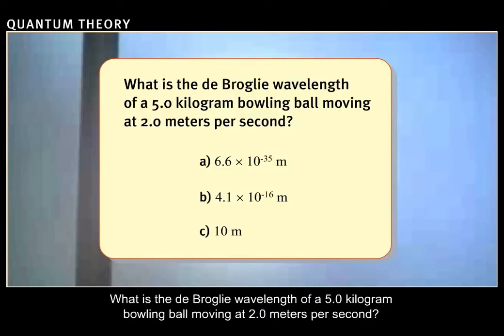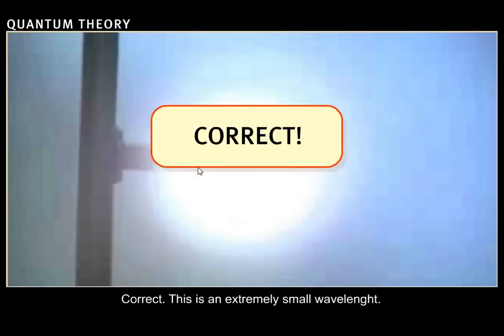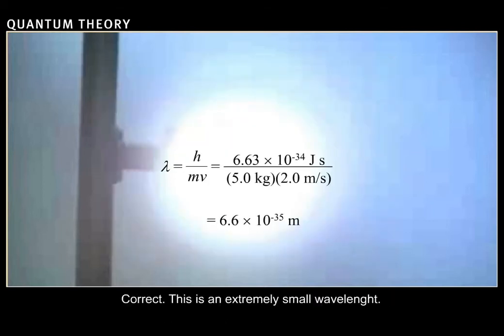What is the de Broglie wavelength of a 5.0 kilogram bowling ball moving at 2.0 meters per second? Correct. This is an extremely small wavelength.